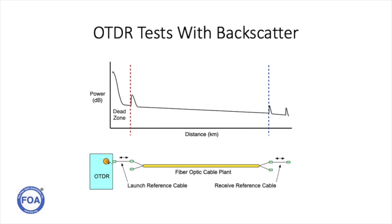The receive reference cable is used to measure the connector on the far end of the cable plant. Some OTDR tests are not actually measuring end-to-end loss — for example, when installing a cable plant it is common to use an OTDR to verify splices as they are being made. In that case, we are only interested in the loss of the splices, not the end-to-end loss. So the receive reference cable is not necessary for all OTDR tests, only those where we are measuring end-to-end loss.